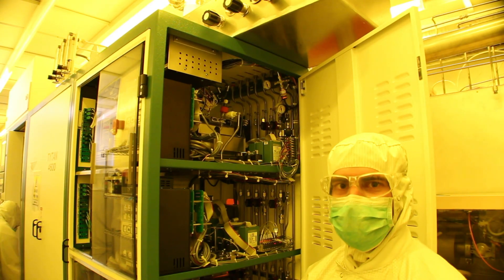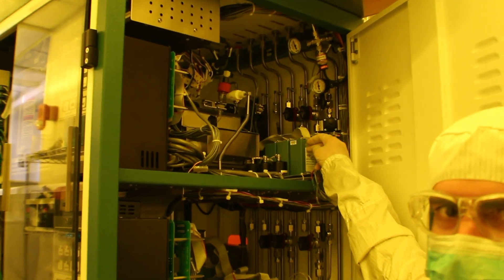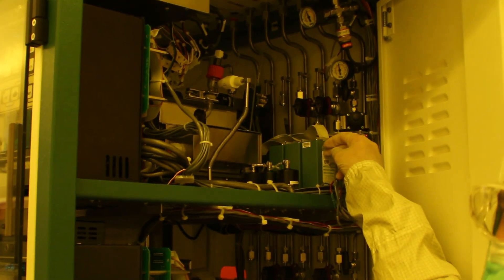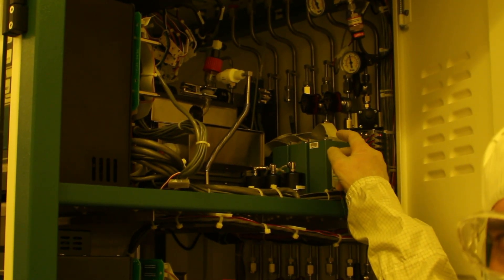All right, so I'll go ahead and explain some things about the furnace before we actually load into it. This blue box right here is called the mass flow controller. That's going to control the amount of gas that we're going to allow into it as well as the rate that is coming in.